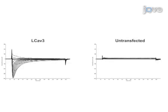Results from recording experiments on cells transfected with voltage-gated calcium channels such as LCAV1, LCAV2, or LCAV3 indicate that the channels have been successfully transfected and expressed by the cells, although only representative results for LCAV3 are shown.